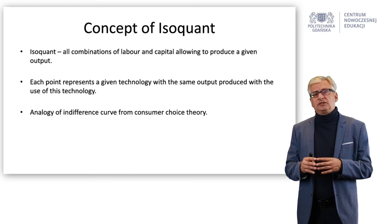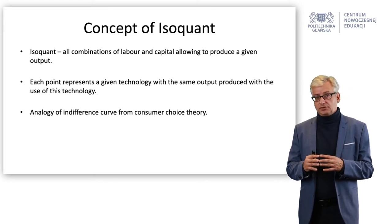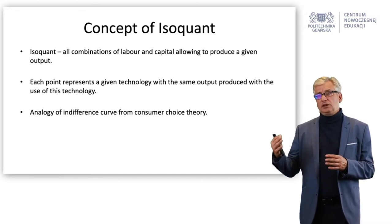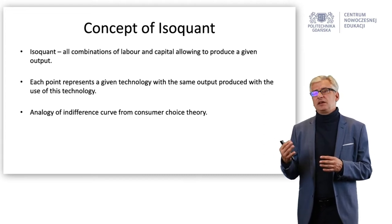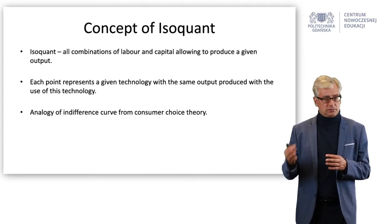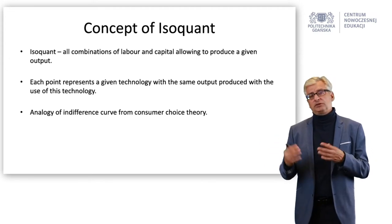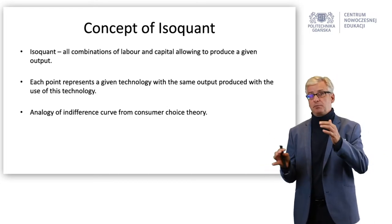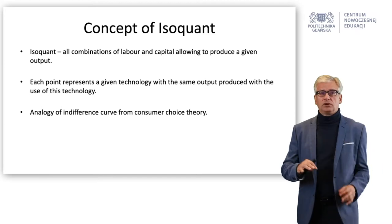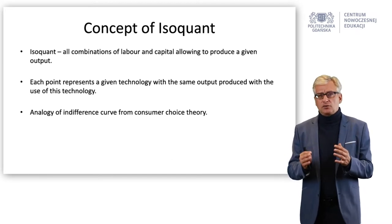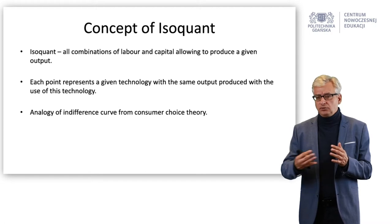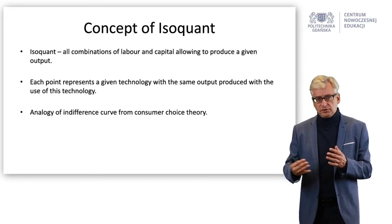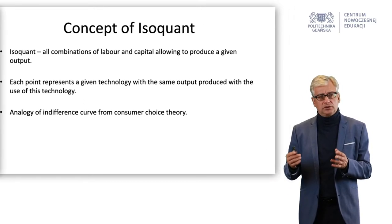You could say that the isoquant is analogical to the indifference curve. When you look at an indifference curve, you say all the points represent the same value to the consumer — the happiness of the consumer is the same, whether it is created by Haribo bears and M&Ms in different proportions. So when you look at the producer, you could say the isoquant allows to produce a certain output and shows all the technologies that can be used to achieve that.